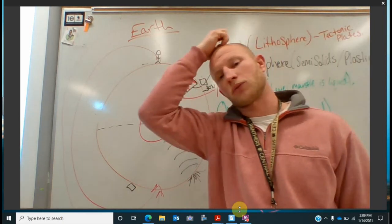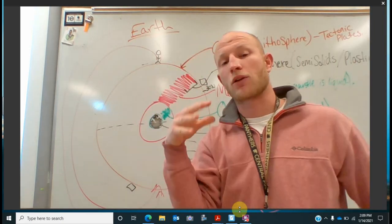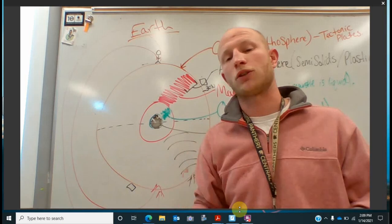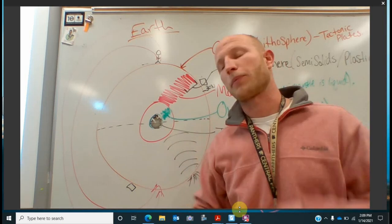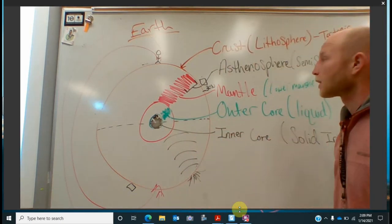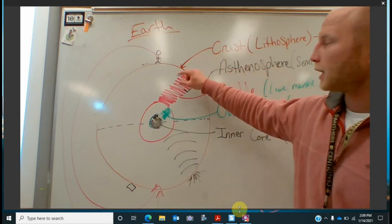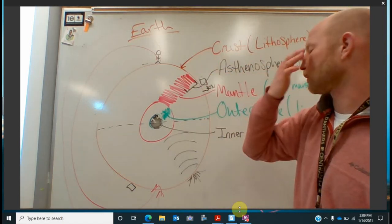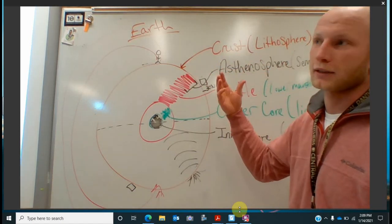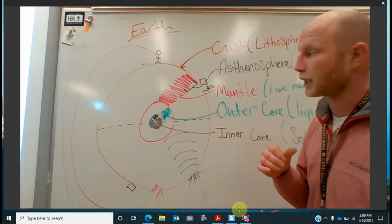The 12 individual plates that make up the surface of the earth that are all moving independently of each other, crashing into each other, pulling away from each other, rubbing up against each other. And then after our crust, this guy can be between 40 kilometers thick and 75 kilometers thick, depending where it's at. So it's pretty thin.